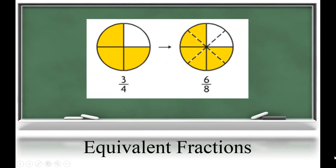In this unit of study, students will build an understanding of equivalent fractions and how to make equivalent fractions. An equivalent fraction is a fraction that names the same amount. You can see here that three-fourths and six-eighths show the same amount of the whole, or the same area of the whole. However, six-eighths is broken into smaller pieces.